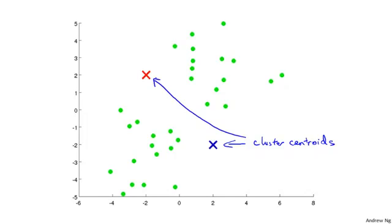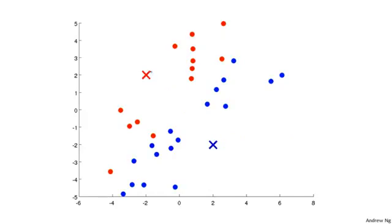The first of the two steps in the inner loop of k-means is the cluster assignment step. What that means is that it's going to go through each of the examples — each of these green dots shown here — and depending on whether it's closer to the red cluster centroid or the blue cluster centroid, it's going to assign each of the data points to one of the two cluster centroids. It's going to color each of the points either red or blue depending on which centroid is closer. I've done that in this diagram here.